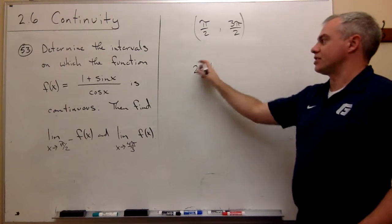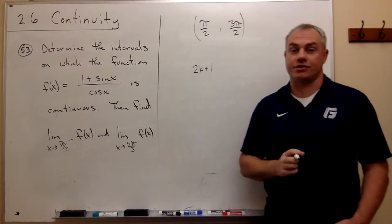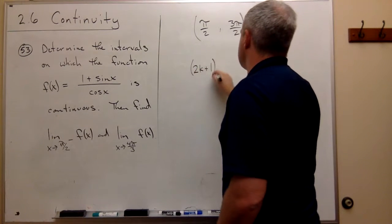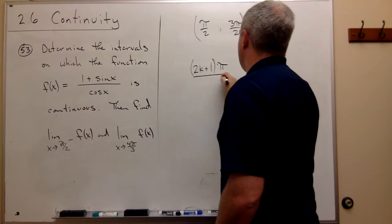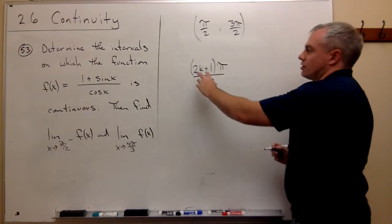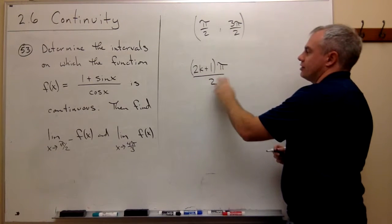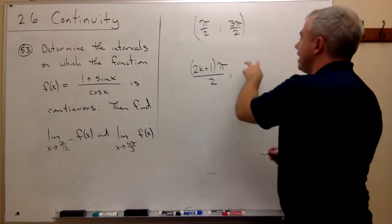Notice that this is an odd number if k is an integer, times pi over 2. So some odd number times pi over 2, up to the next odd number.